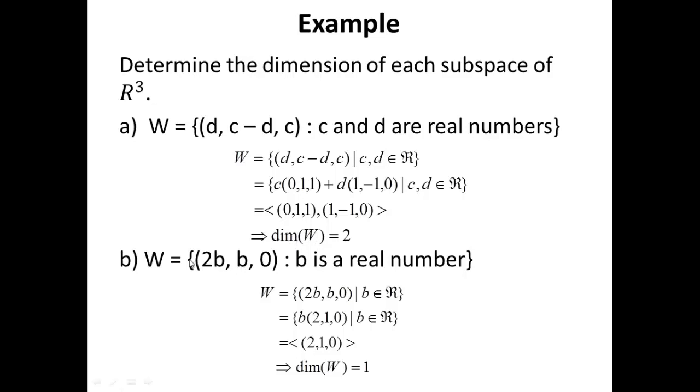Similarly, we can verify that W as defined is a subspace of R3. Just verify those two properties. W is not empty. And for every U and V in W, alpha U plus beta V is in W. Now to find the dimension of W, we start again by setting W as a set of all vectors represented in this form. Factorize out b, we end up with (2,1,0).